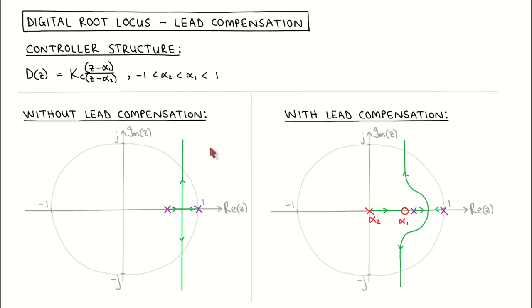Consider the conceptual example shown here, where the two plant poles are drawn in purple. If we use a proportional controller for this plant, the resulting root locus is shown in green. When we look at the stable closed loop poles that can be achieved by varying the controller gain, we see that these closed loop poles will be close to z equal to 1, which means that the closed loop response would be relatively slow.